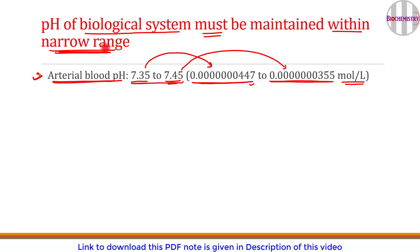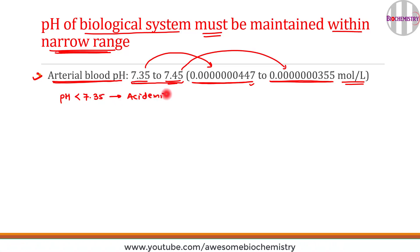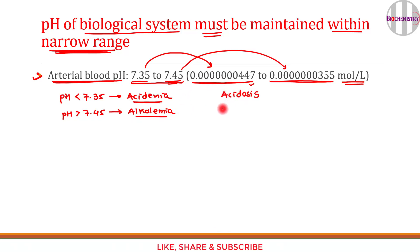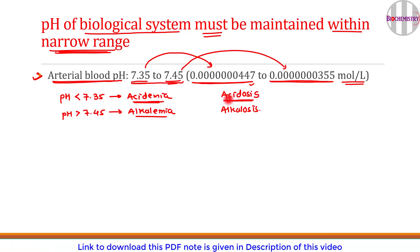If arterial blood pH becomes less than 7.35, we call this condition acidemia. If pH becomes more than 7.45, we call it alkalemia. In many books, acidemia is used interchangeably with acidosis, but this is wrong — there is a subtle difference between acidemia and acidosis, and likewise between alkalemia and alkalosis.